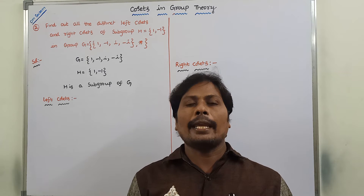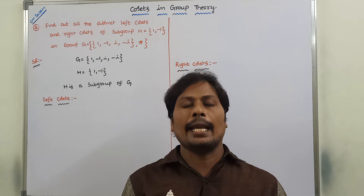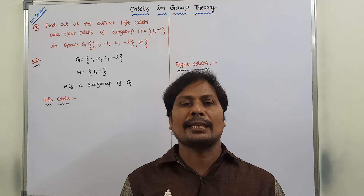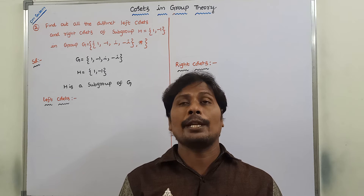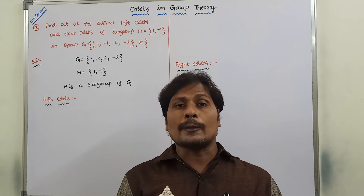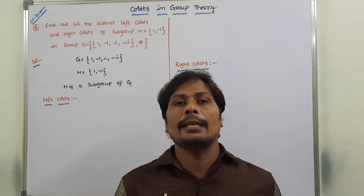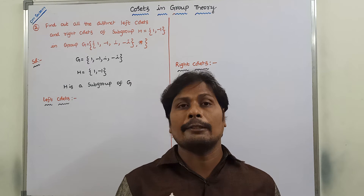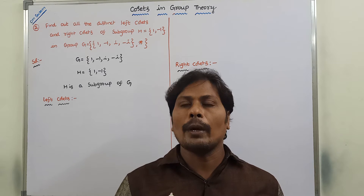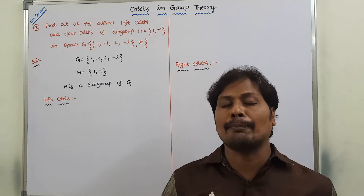Hi friends, today I am giving a lecture on an example problem on cosets in group theory of the discrete mathematics course. In the previous video, we have already discussed the definition of coset, left coset, right coset, and properties of cosets. If anybody wants those concepts, please refer to those videos in my channel. Now, in this video, we have to discuss one more example problem on cosets in group theory.